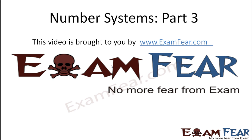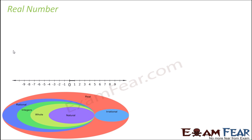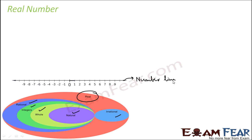Hello friends, this video on number systems part 3 is brought to you by examfear.com — no more fear from exams. So we talked about natural numbers, whole numbers, integers, rational numbers, and irrational numbers. Let's talk about real numbers. Real numbers are the numbers which you can plot on the number line — they exist for real.